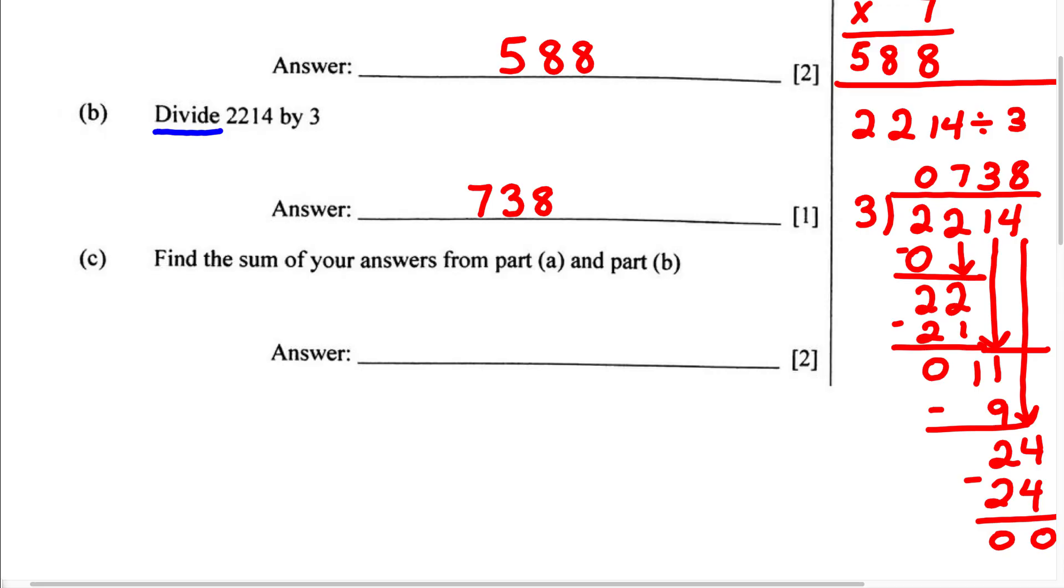Now for part C, it says find the sum of your answers from part A and part B. Now you might be wondering what are we doing here, but the question gives you one keyword, and that keyword is sum. Now what is the sum? We know the sum is going to be the answer when you add two or more numbers.